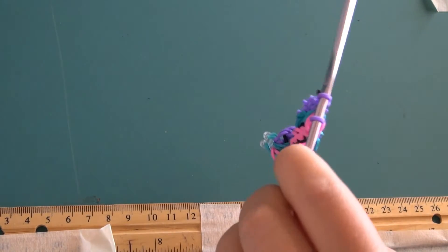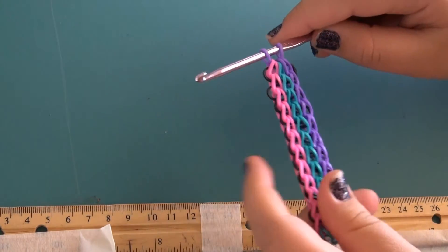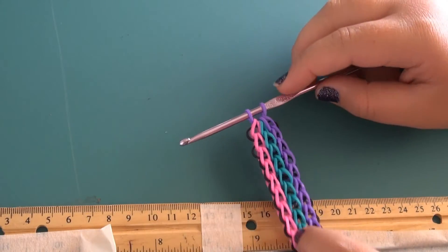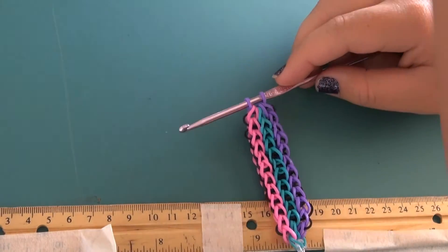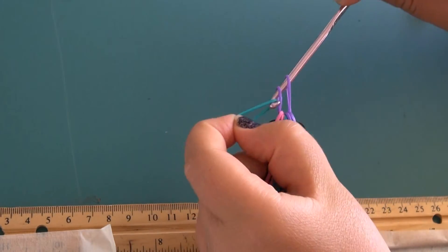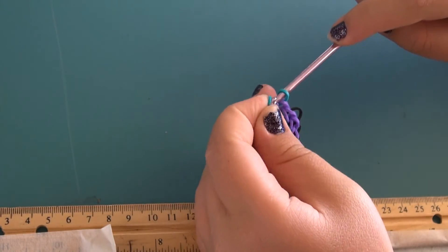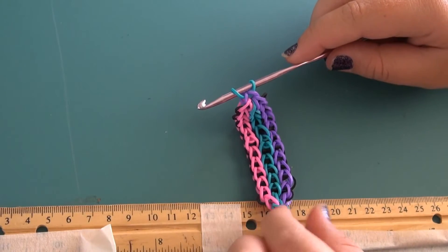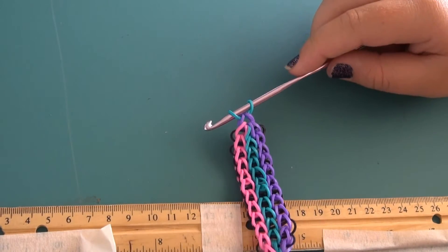And if you secure it like I did, then it should not fall apart. And now we are going to continue with our extension. And to do that, you get another band and you pull it through the one you have your hook through. And you continue this process for about six bands.